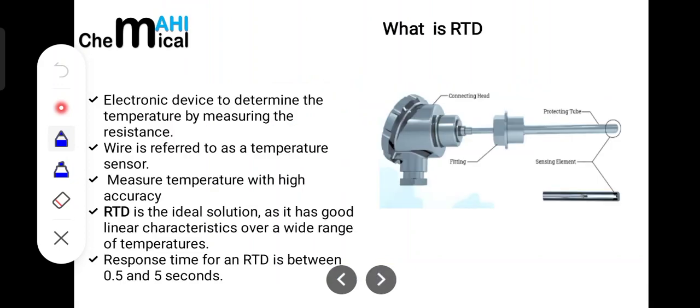So at first, what is RTD? As the name suggests, it is an electronic device used to measure temperature with respect to the change in resistance in a normal definition. Here we have this sensing element that is a wire made up of different types of elements as per our requirements.